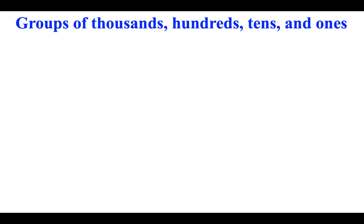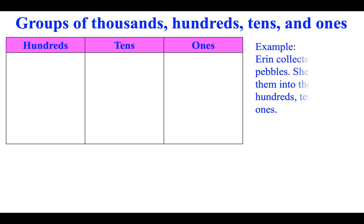Groups of thousands, hundreds, tens, and ones. Example: Erin collected some pebbles. She grouped them into thousands, hundreds, tens, and ones.